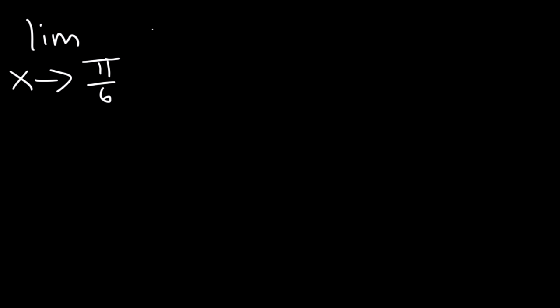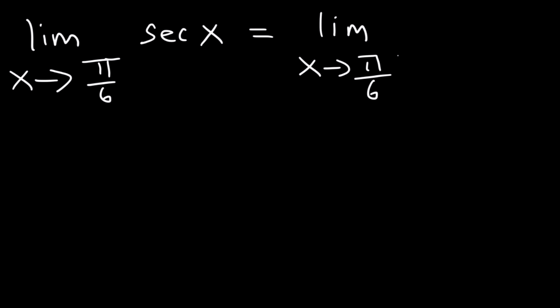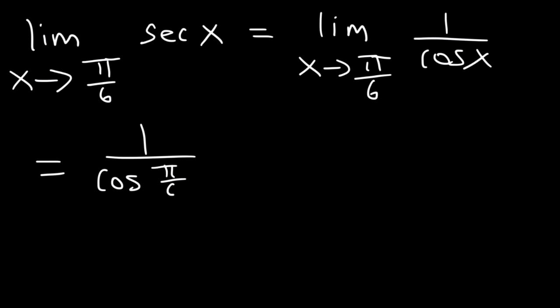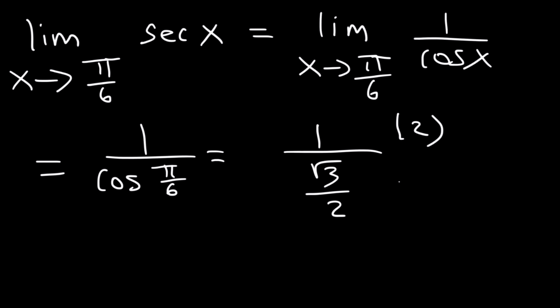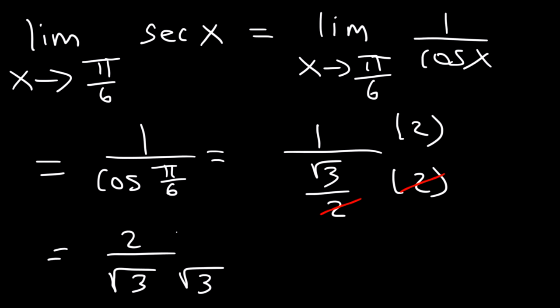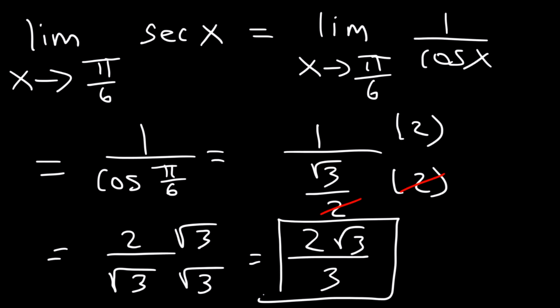What is the limit as x approaches pi over 6 of secant x? Secant is equivalent to 1 divided by cosine. Cosine of pi over 6 — which is 30 degrees — is root 3 divided by 2. So we need 1 divided by root 3 over 2. Multiplying top and bottom by 2, we get 2 divided by root 3. Rationalizing by multiplying by root 3 over root 3 gives us 2 root 3 divided by 3.